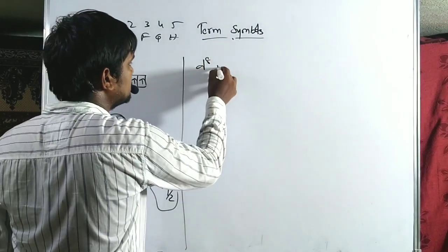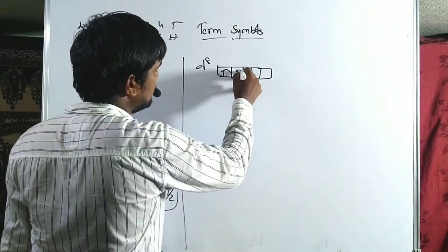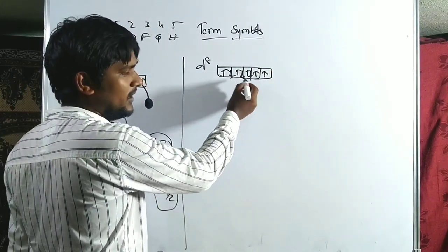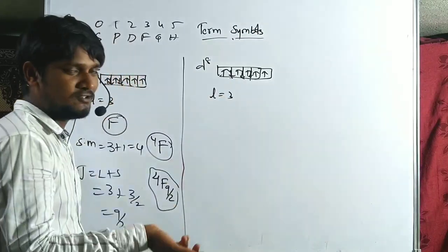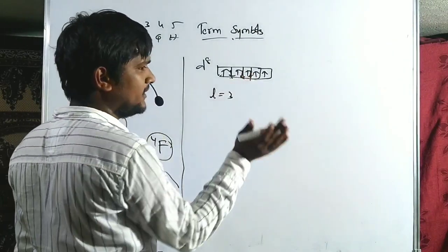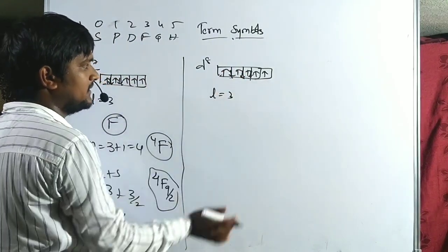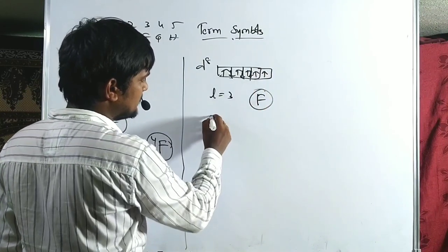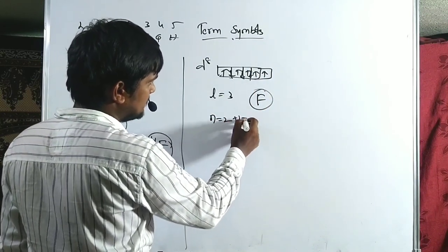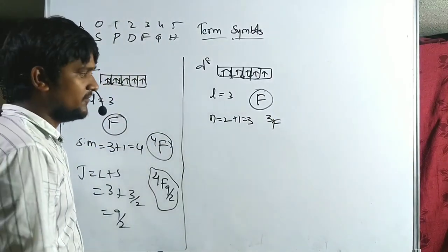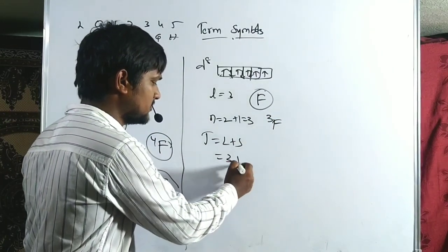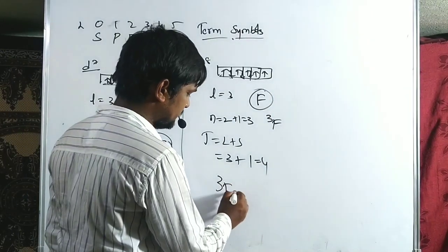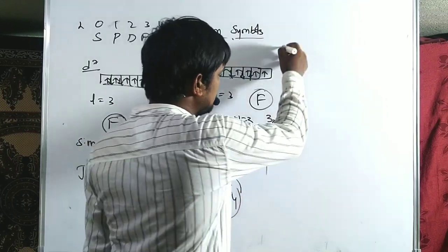For D8: eight electrons with two vacancies remaining. L = 3, term is F. Two unpaired electrons, multiplicity = 2+1 = 3, giving 3F. More than half-filled, J = L+S = 3+1 = 4. Ground term symbol for D8 is 3F4.